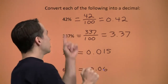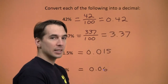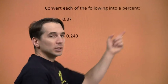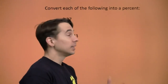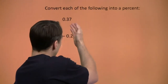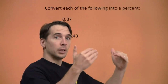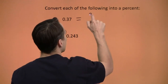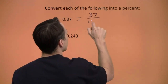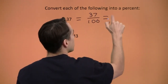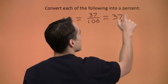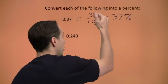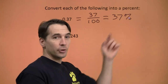Now that we've got turning percents into decimals down, we're going to run it back — turn some decimals into percents. Percent means per hundred, so I want to write 0.37 as something per 100. Well, 0.37 is just 37 hundredths, which is 37 percent, because percent means per hundred. So once I have 37 per 100, I have 37 percent.